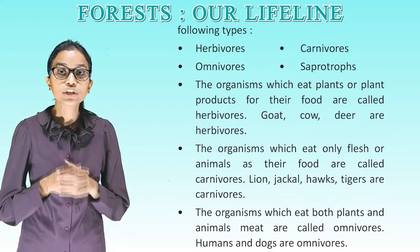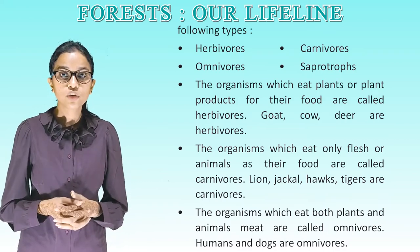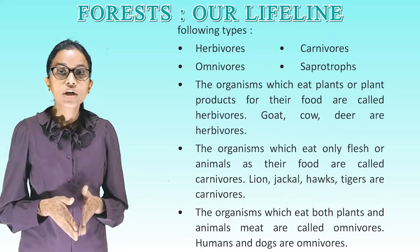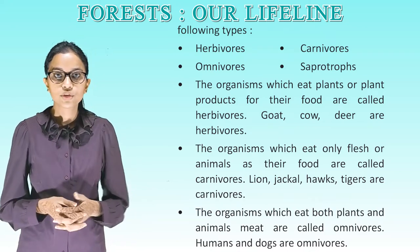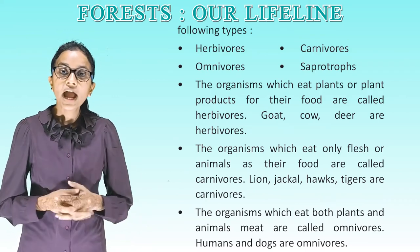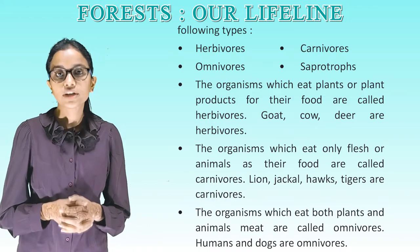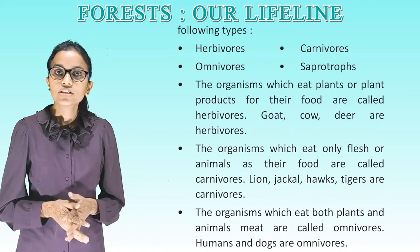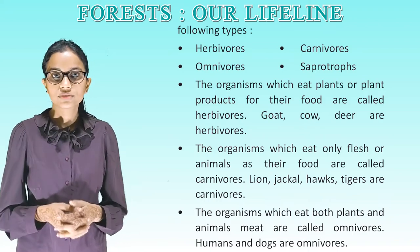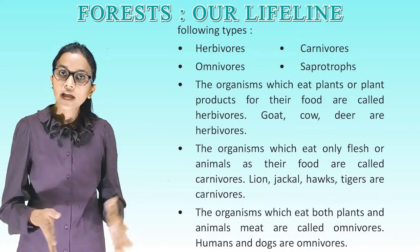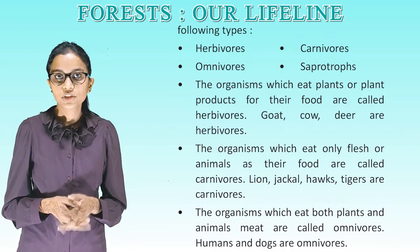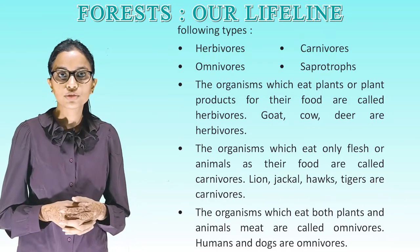Herbivores are organisms which eat plants or plant products — goat, cow and deer are herbivores. Carnivores eat only flesh or other animals — lion, jackal, hawks and tigers are carnivores. Omnivores eat both plants and animal meat — humans and dogs are omnivores.